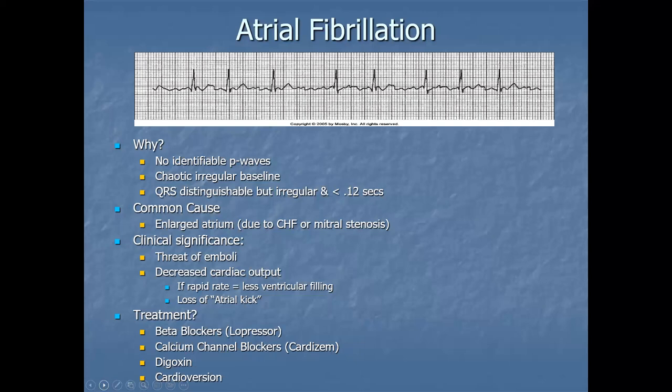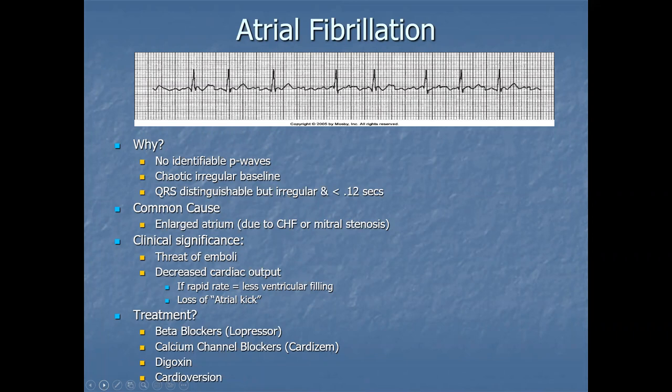Many patients with atrial fibrillation should routinely be anticoagulated to prevent emboli. However, anticoagulation carries the risk of hemorrhagic stroke if they fall, particularly in older patients — it's a cost-benefit analysis. Treatment includes beta blockers, calcium channel blockers such as cardizem, digoxin (an older drug with a narrow therapeutic index), and cardioversion — using a low-voltage synchronized shock to convert the atria back to normal sinus rhythm.